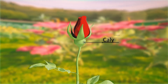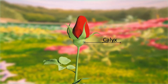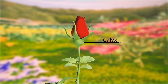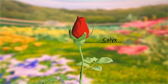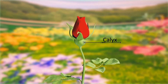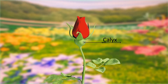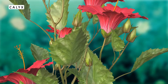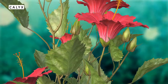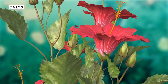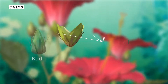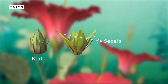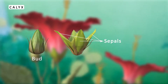Calyx is the outermost whorl of the flower. The members of the calyx are called sepals. Generally, sepals are green, leaf-like, and protect the flower in the bud stage.